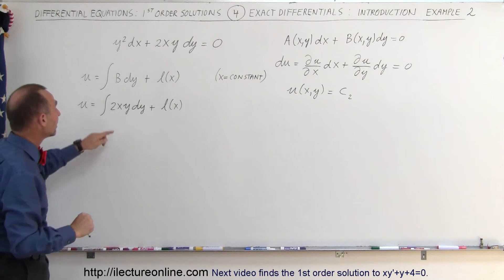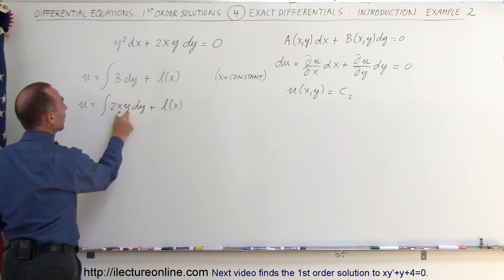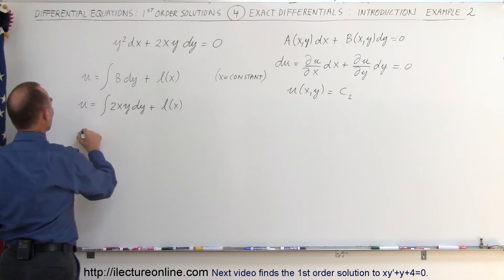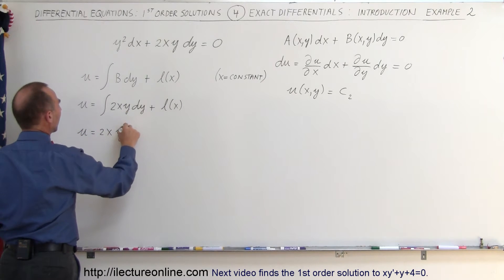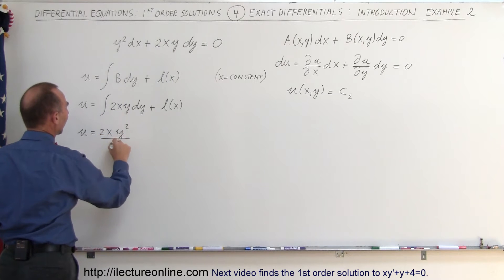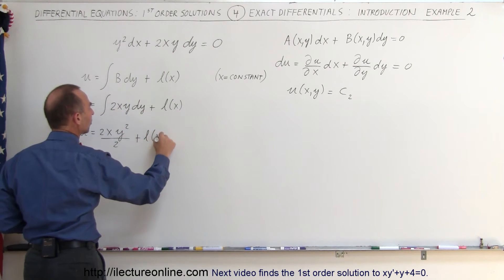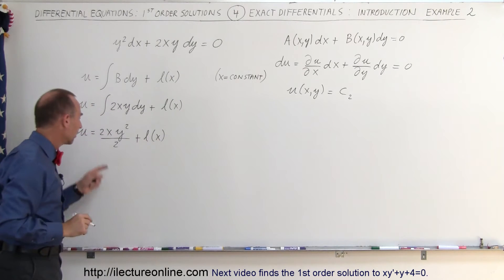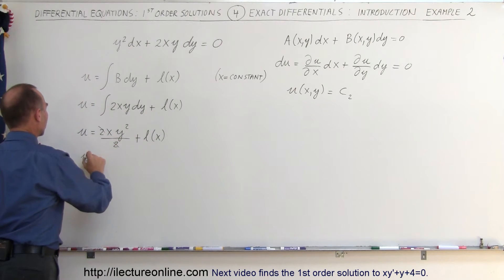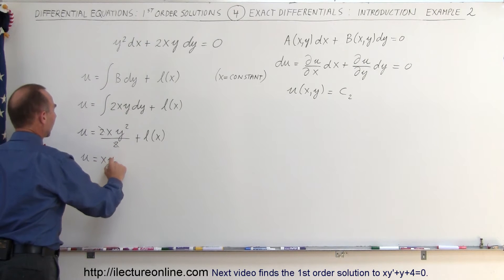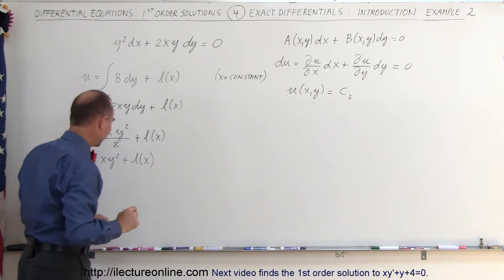Since x is a constant, 2x is a constant, so we integrate over y. That means u equals 2x times y squared over 2, plus the constant of integration L of x. The twos cancel out, and we can write that u is therefore equal to xy squared plus some function of x.